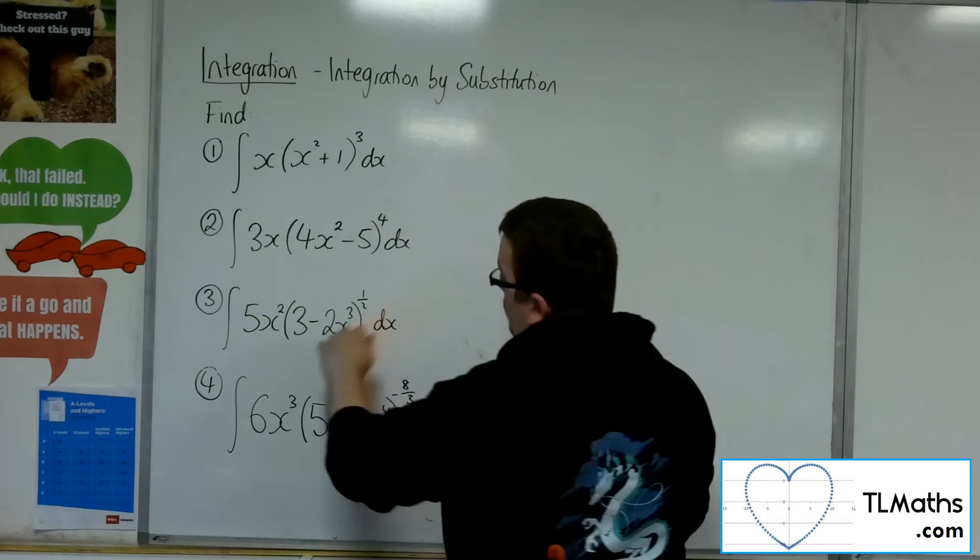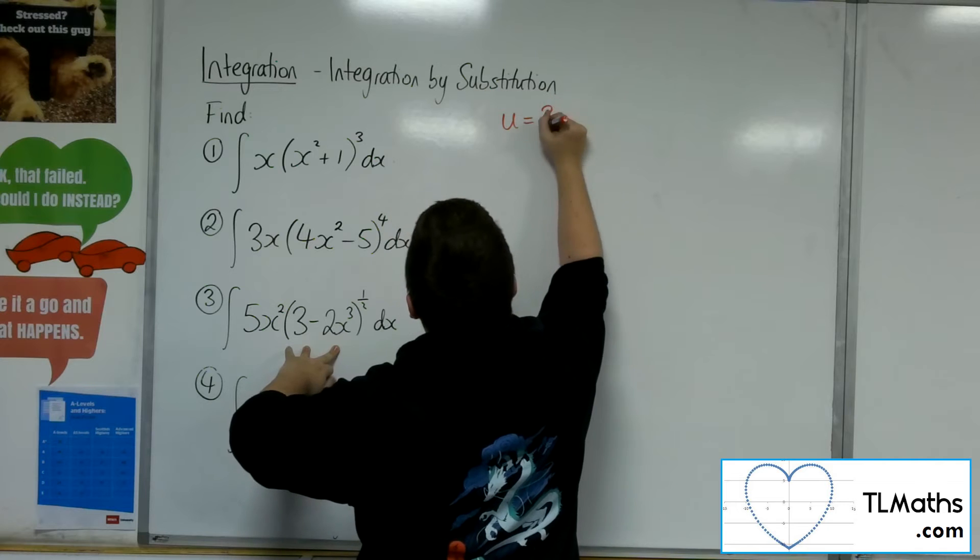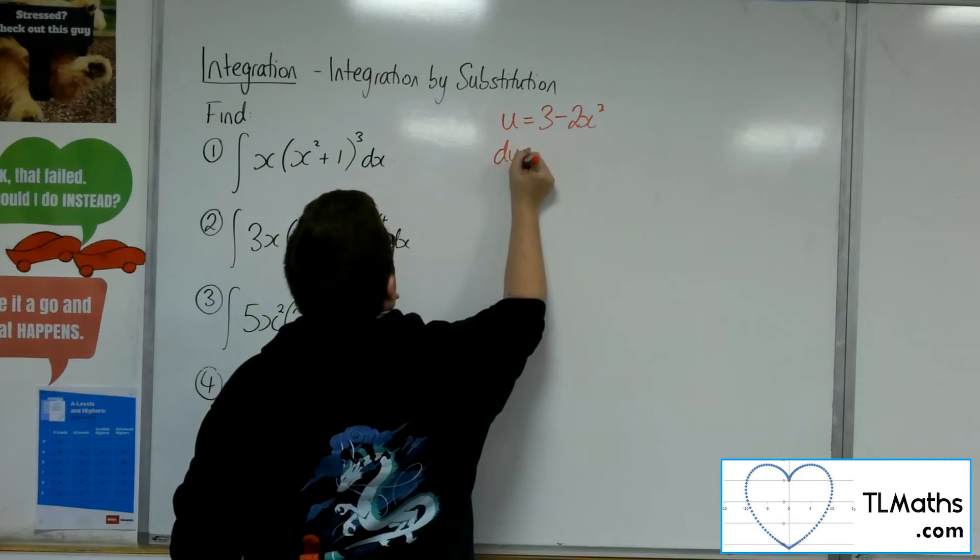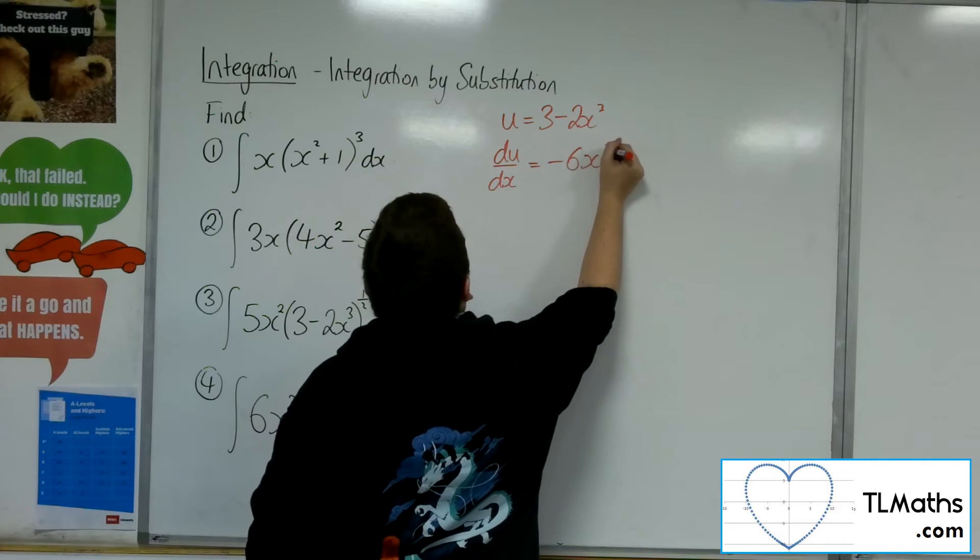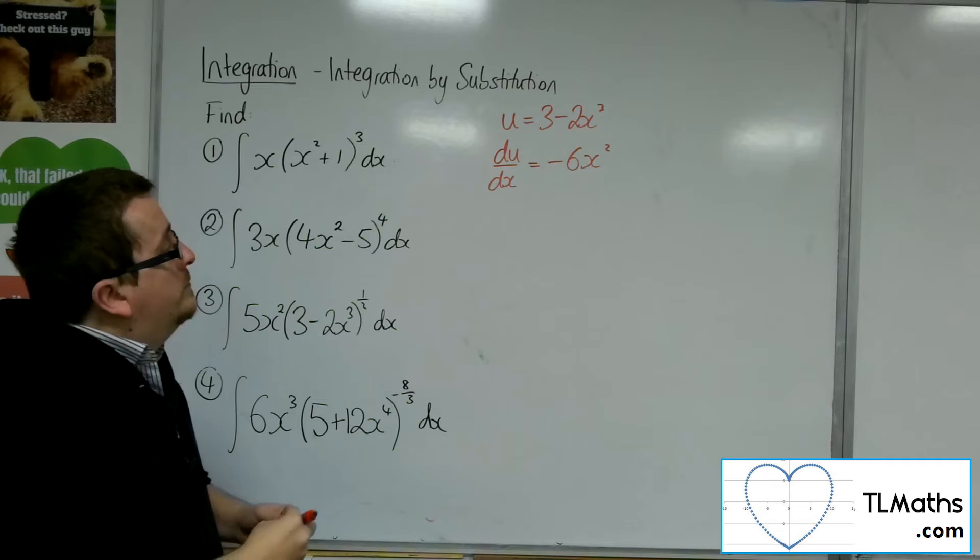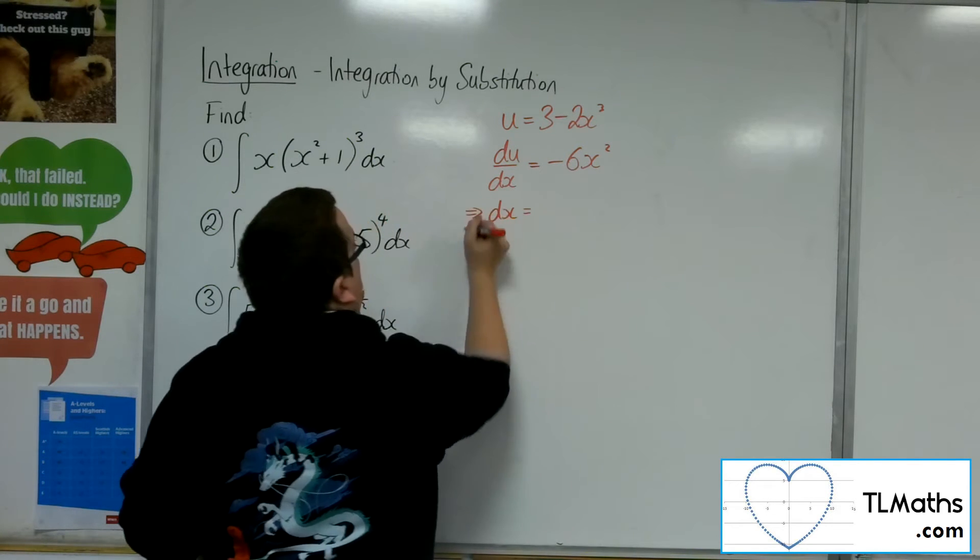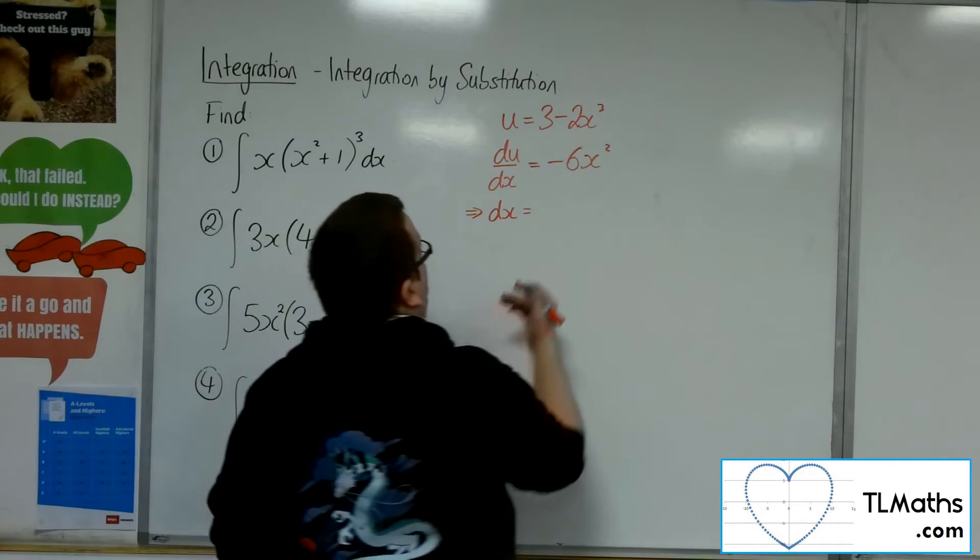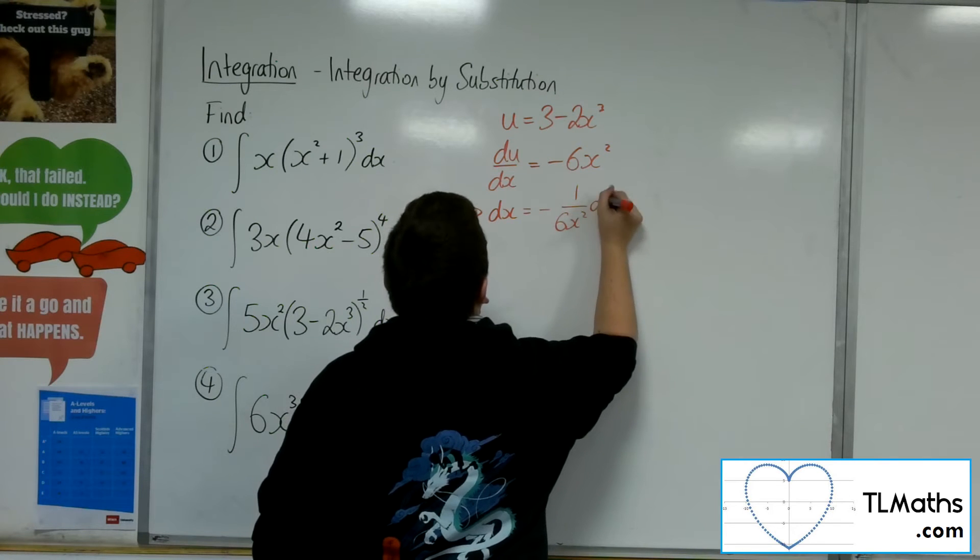Number 3. We have 3 minus 2x cubed as the u. So du by dx will be minus 6x squared. Now rearranging this, I would multiply both sides by dx, divide both sides by minus 6x squared. So minus 1 over 6x squared du.